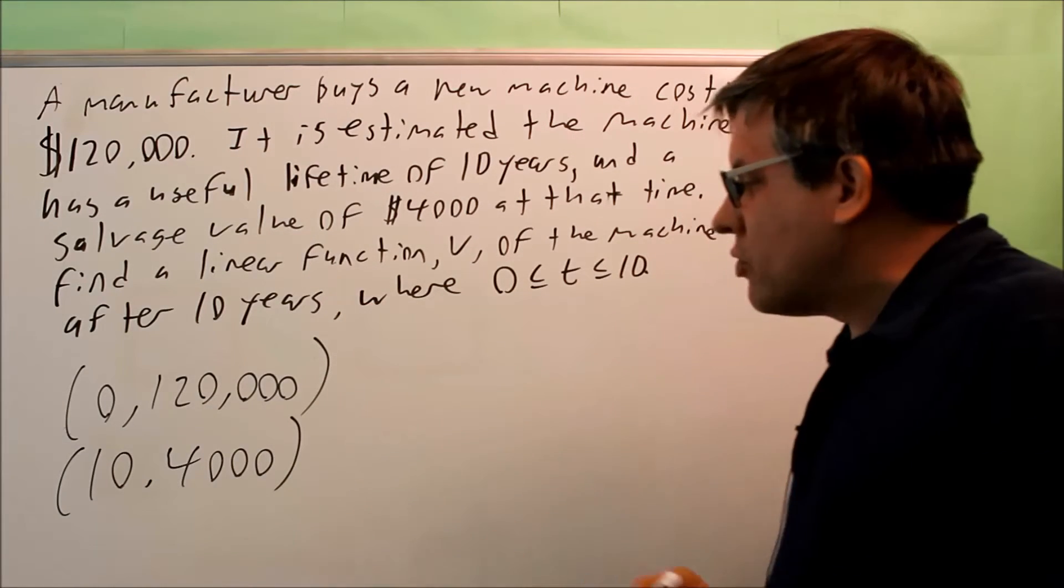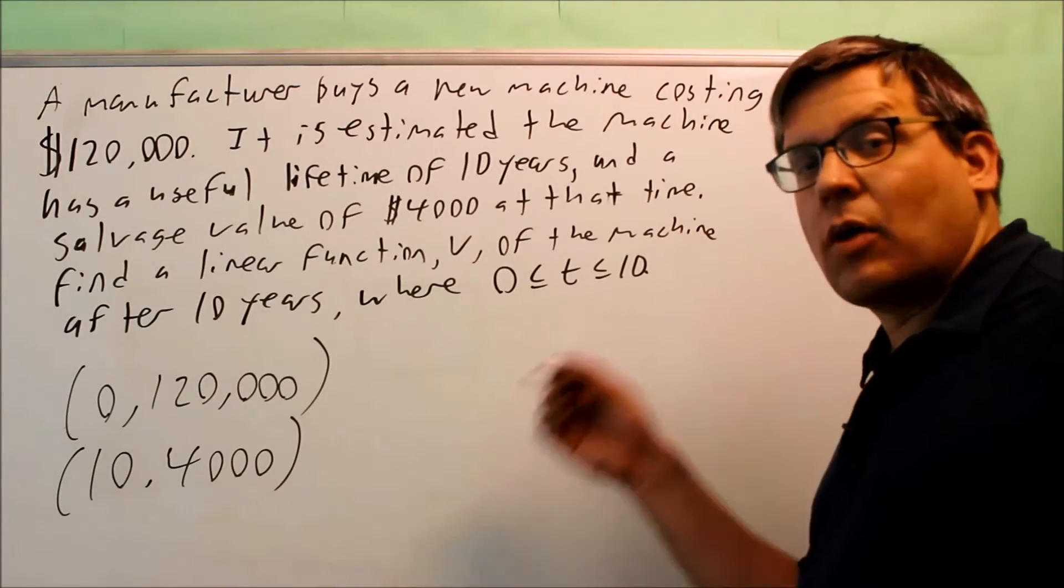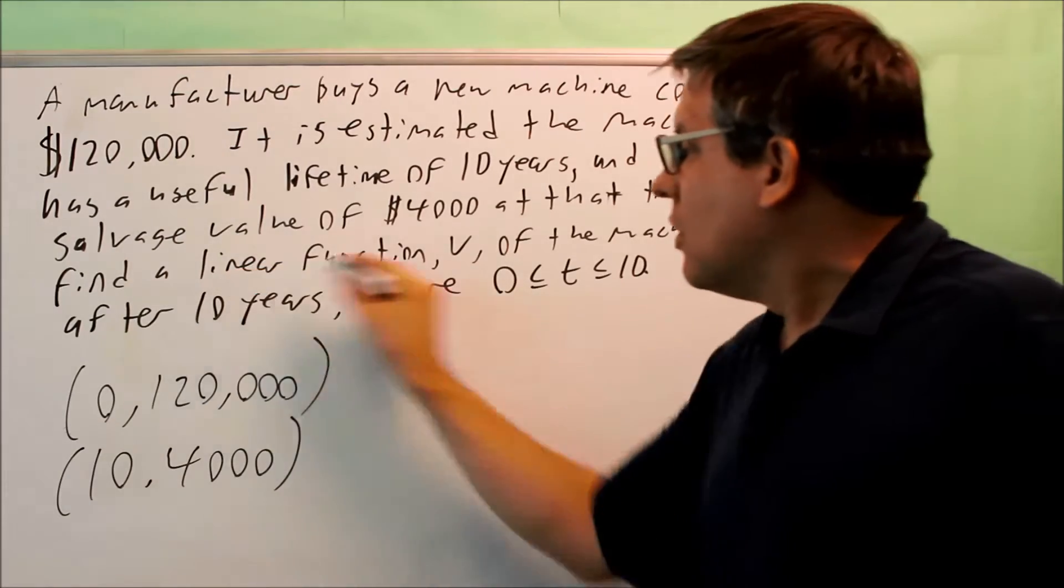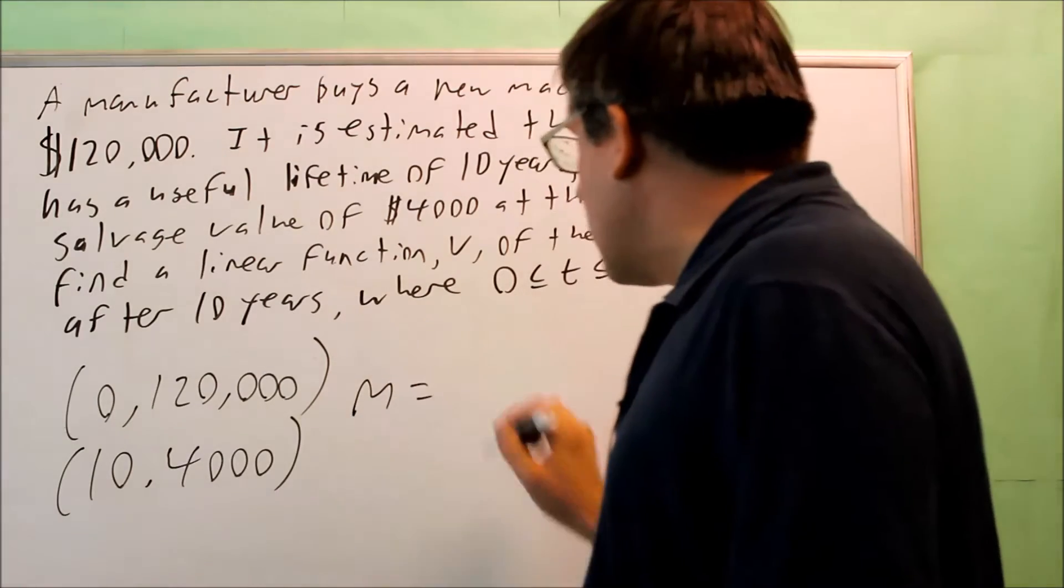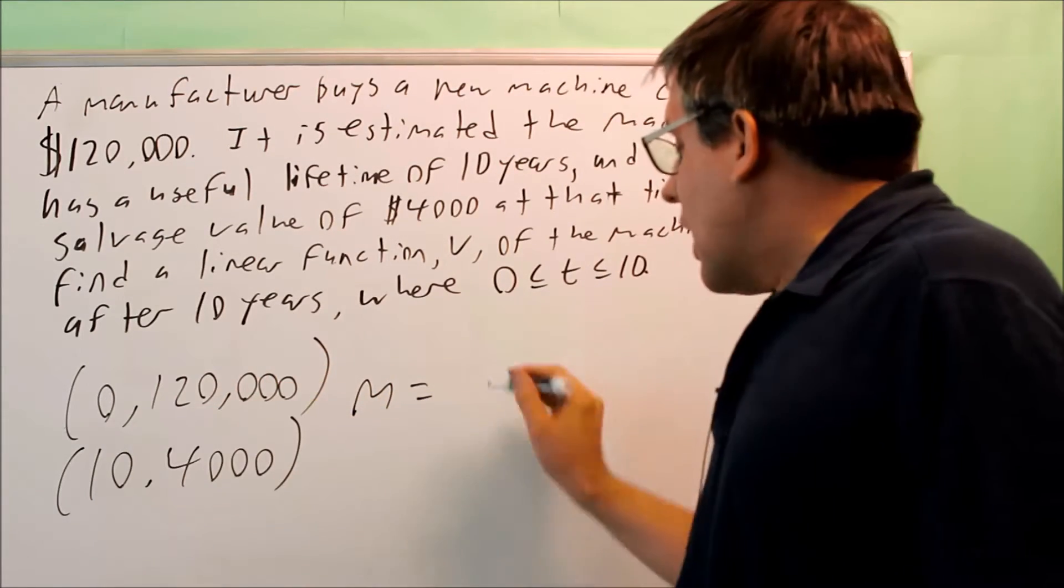Now, the reason why I want to come up with two points is because I'm going to put it into the slope formula, and I want to find the slope of this because linear functions are going to have a slope. So to do that, you take the difference in the y's over the difference in the x's.